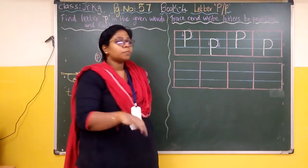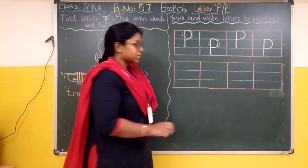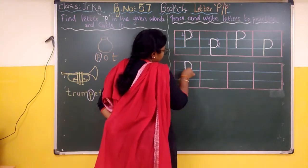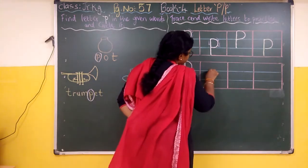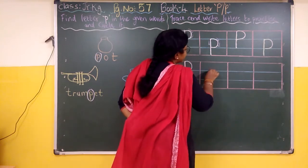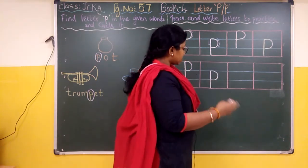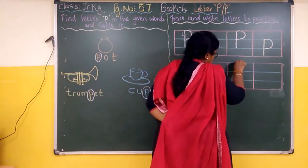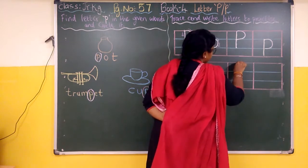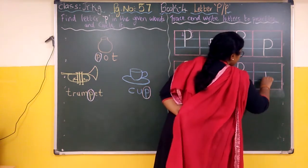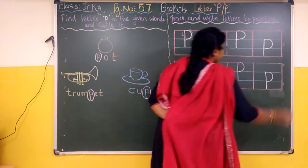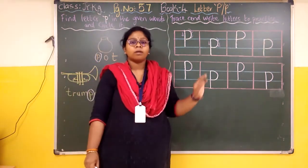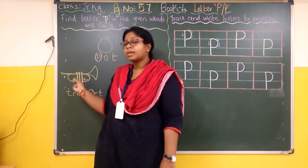Now coming to the writing part without dots or arrow marks — we will follow the lines. For capital letter P you will use the first three lines. And in the next box for small letter P, you will use the last three lines — leave the first red line and only use the last three lines. Once again — capital letter P, small letter P. In the same way you will finish your practicing and writing part neatly.